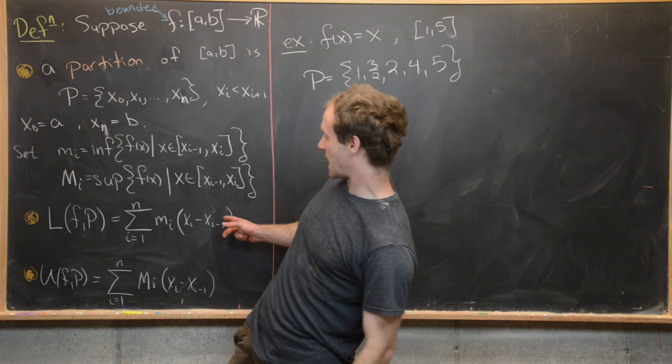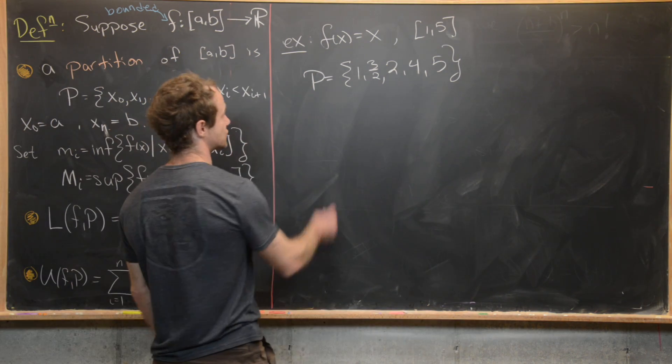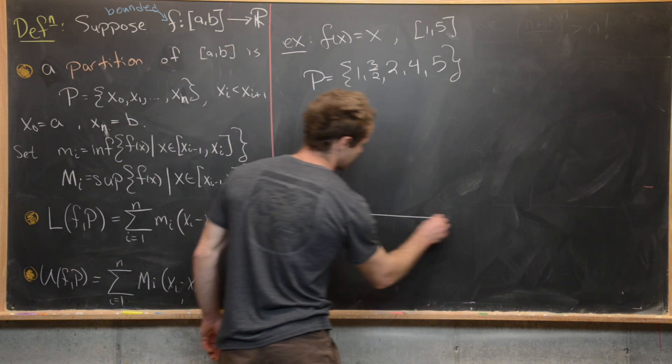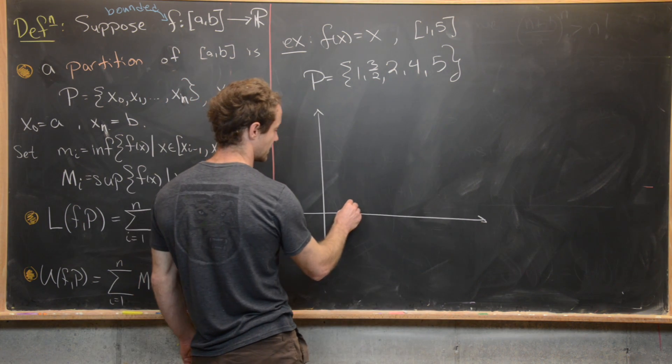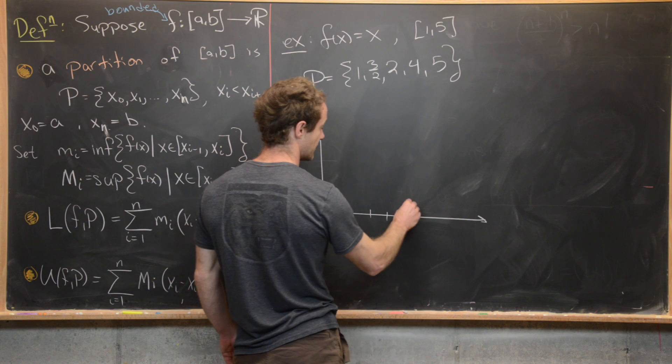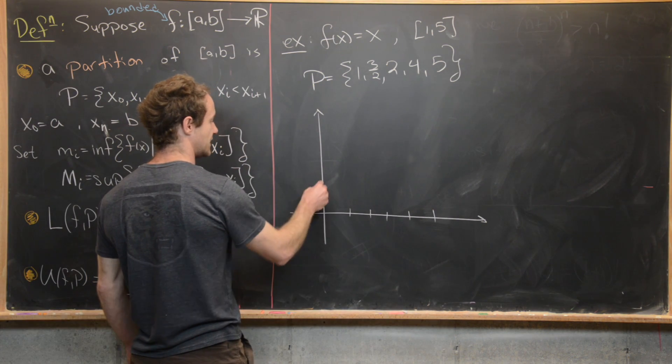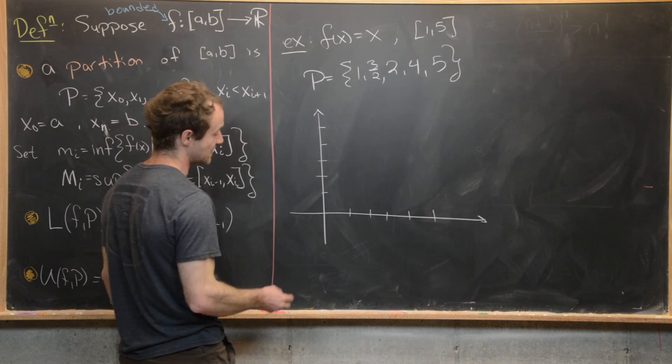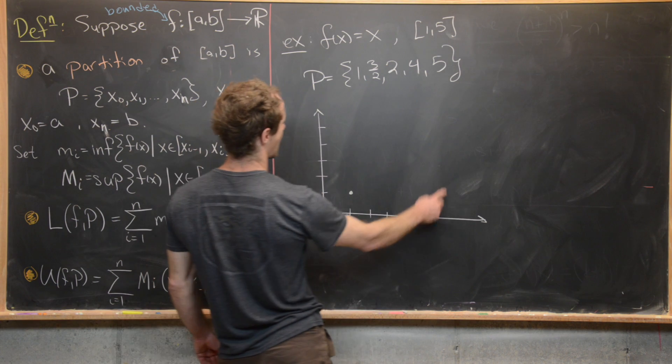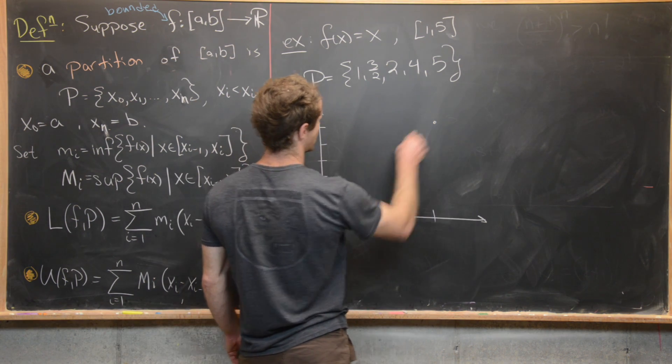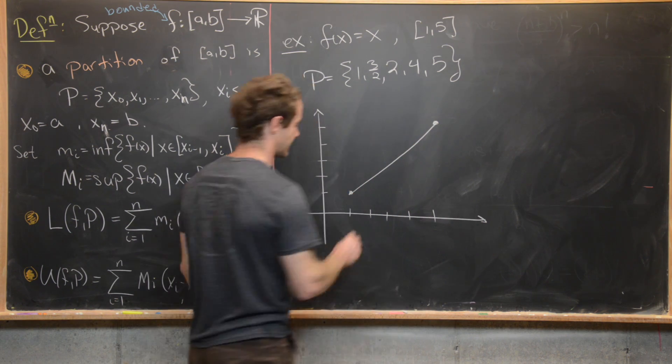So let's maybe calculate this L(f,p) and this U(f,p). We're going to use the fact that f(x) is an increasing function. Let's maybe get a picture going. So let's say we've got, we need points between 1 and 5. So here we have 1, 2, 3, 4, 5. Okay, that's good. That means we need points between 1 and 5 here too. 3, 4, 5. That's good. We know what this function looks like. Like it's going to be a line from that point, (1,1), to this point up here, (5,5). So that is the graph of our function.